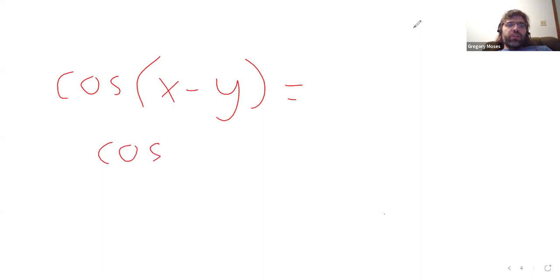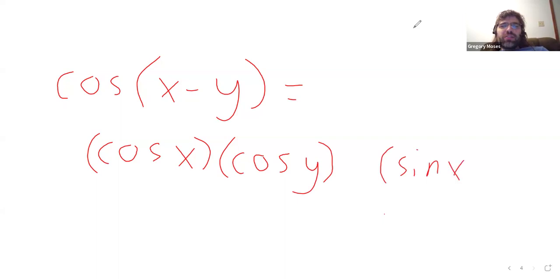We're going to have the cosine of x. We're going to have the cosine of x times the cosine of y. And we're going to have the sine of x and the sine of y.